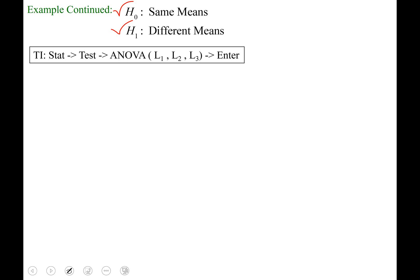Everybody together, hit Stat. Arrow over to Tests. If you arrow up, you'll get there the fastest. It's option H. The program is called ANOVA. And then you see the open parenthesis. Or you could also arrow down. So open that program called ANOVA.